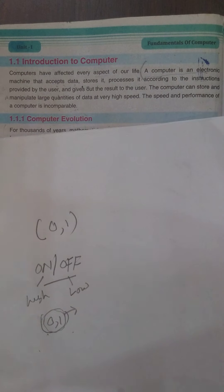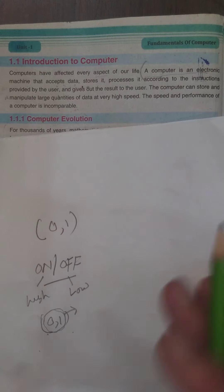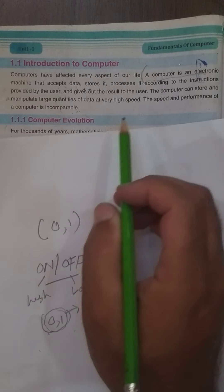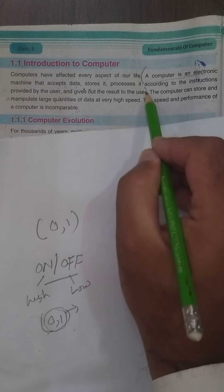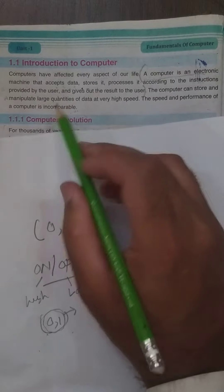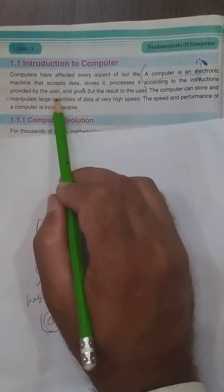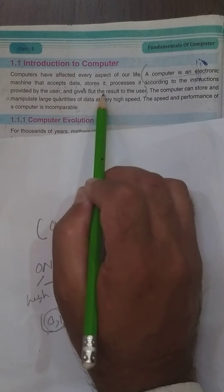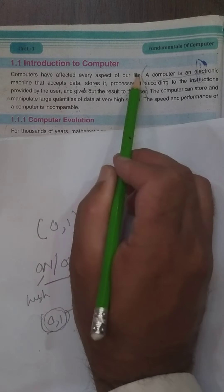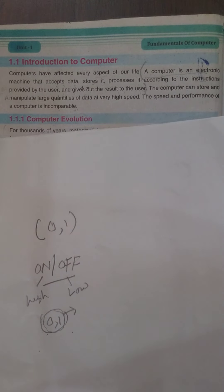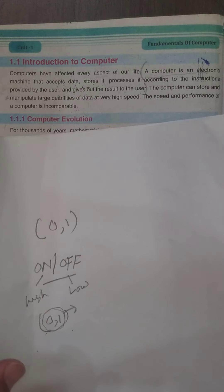Computer کی definition میں بتایا گیا ہے: یہ electronic device ہے، data کو accept کرتا ہے، store کرتا ہے، users کی requirement کے مطابق process کرتا ہے۔ یہ definition آپ کو یاد ہونی چاہیے: 'A computer is an electronic machine that accepts data, stores it, processes it according to the instructions provided by the users, and gives out the result to the user.'